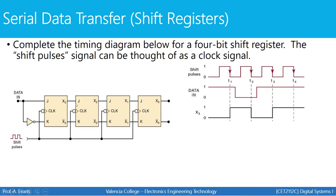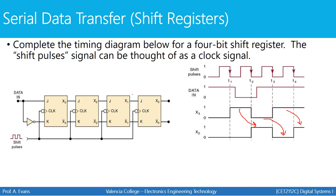Now let's look at X2, which gets its input from the output of X3. X2, X1, and X0 all behave the same way: if input is 1, output is 1; if input is 0, output is 0. On the first clock transition, X3 is 0 so X2 will be 0. On the next transition, the 1 that was in X3 shifts forward to X2. On the following transition, the 0 shifts forward, and then the 1 shifts forward again. With each transition, the data stored in one flip-flop gets shifted forward to the next.